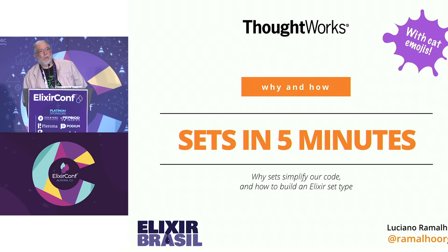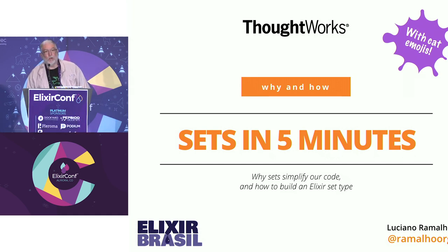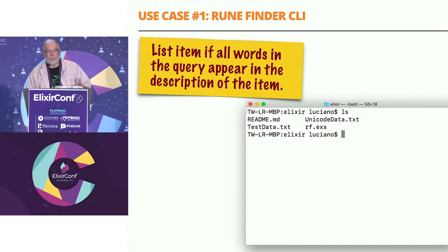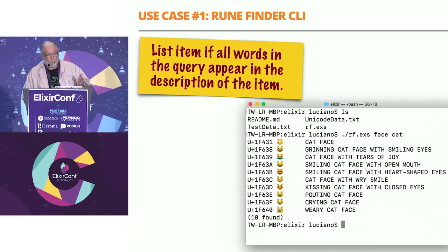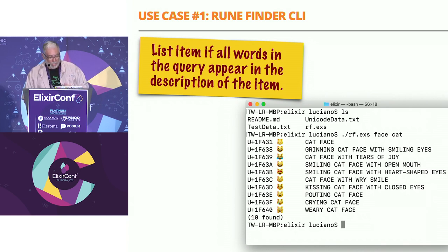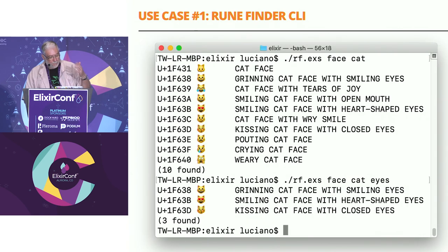I'm going to do a talk prepared for a 45-minute slot at Elixir Brazil, translated and condensed to five minutes. It's about sets. Why use sets? For instance, I have an application — a script in Elixir called RF, the Rune Finder — that lets you search for Unicode characters by name. If I say 'face cat' it lists all Unicode characters that have face and cat. If I add 'eyes,' I only get three cats that also have the word 'eyes' in their name.